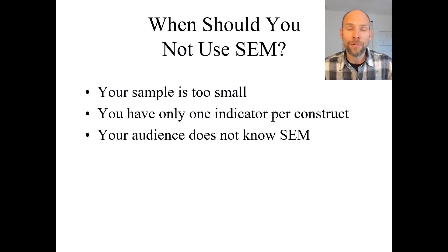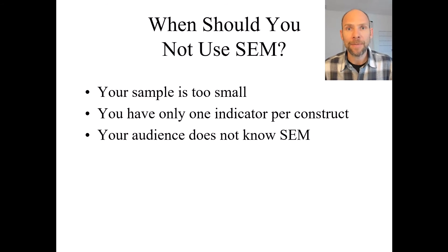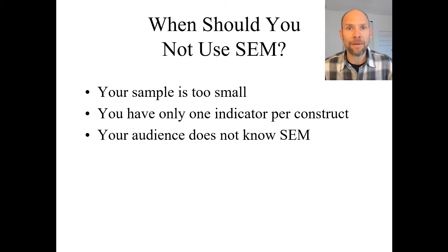Another reason not to use SEM could be if the audience you are presenting the study to, or the readership of the journal you are publishing in, don't know or don't appreciate SEM. If they are not familiar with the technique, are skeptical of latent variables, or your reviewers might still be skeptical, then maybe that's a reason to resort to a technique that uses manifest variables such as path analysis — especially if you have highly reliable variable scale scores, since path analysis might give you very similar results.